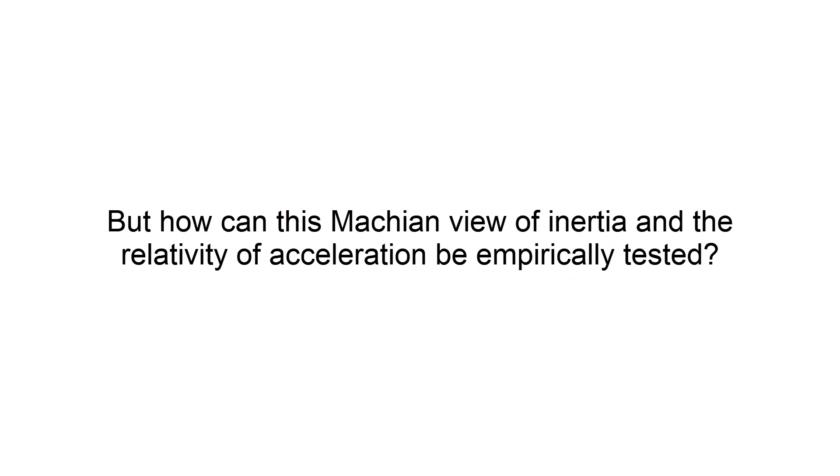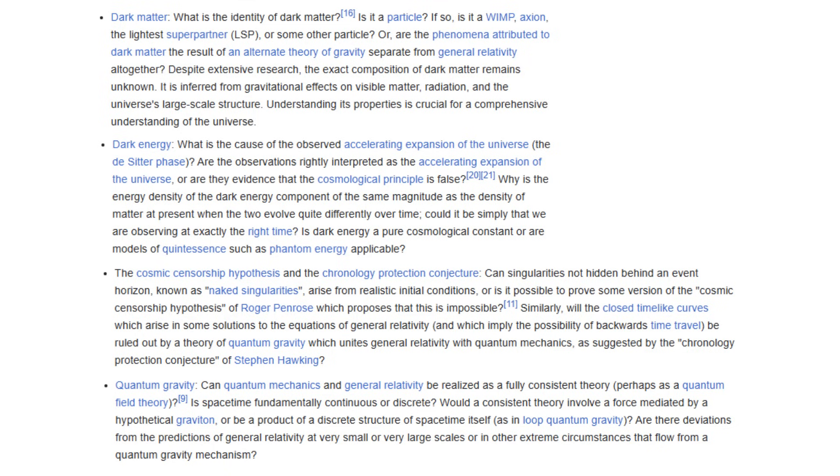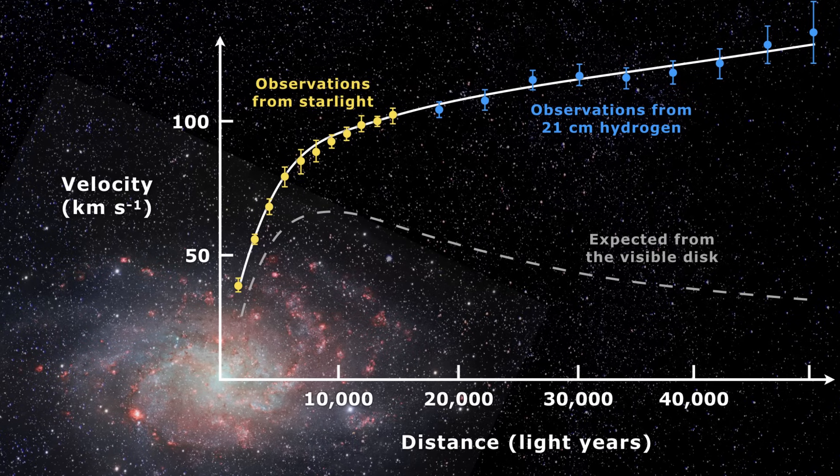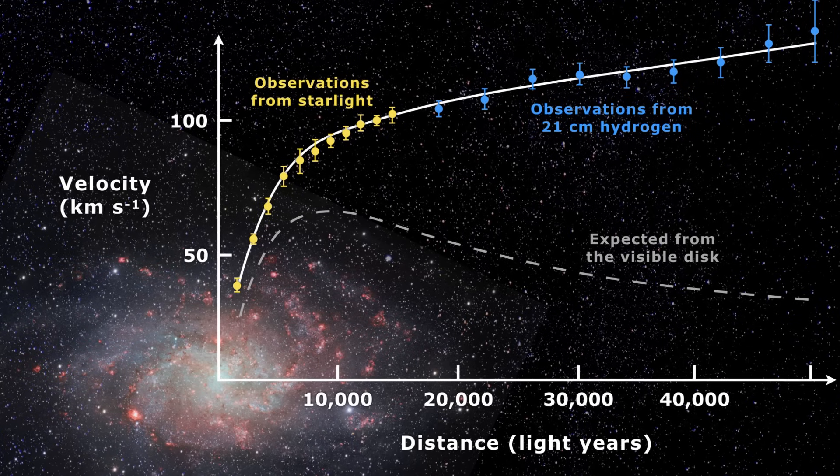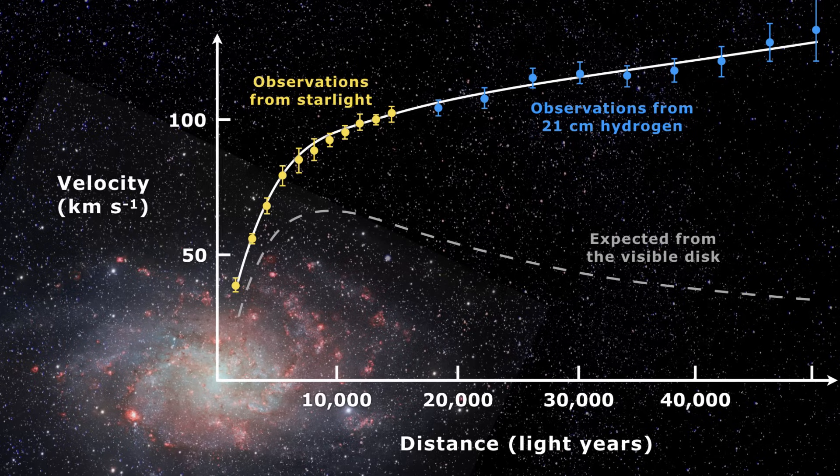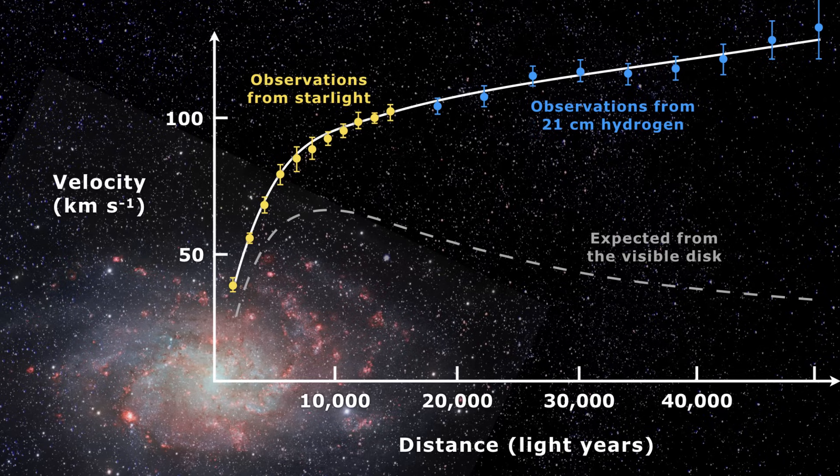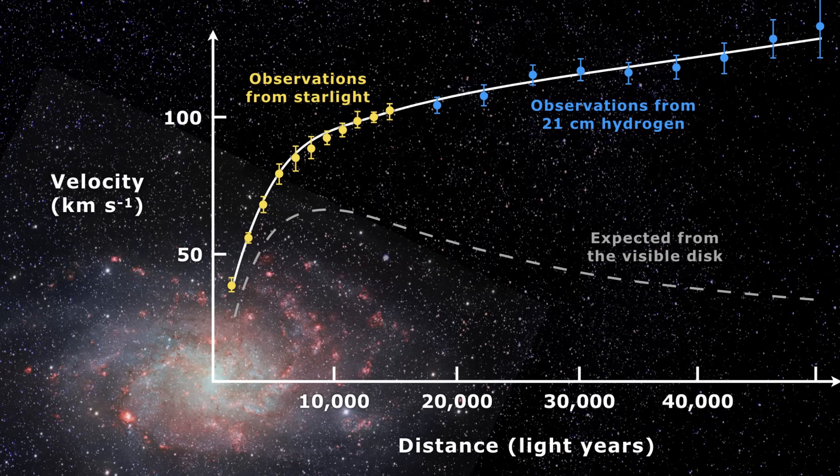But how can this Machian view of inertia and the relativity of acceleration be empirically tested? The way to do this is to focus whether Newtonian and Einsteinian frameworks are in conflict with observations. One of these conflicts is the dark matter effect on galaxy rotation curves. If the problem of dark matter is not solved by physical dark matter, but by a modified theory of gravity or modified inertia, such as Milgrom's MOND.